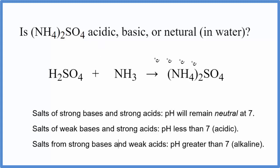To do that, we need to know the equation that produced the ammonium sulfate. So we have H2SO4 sulfuric acid plus NH3 ammonia. So we have our equation.